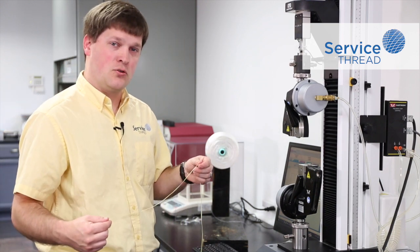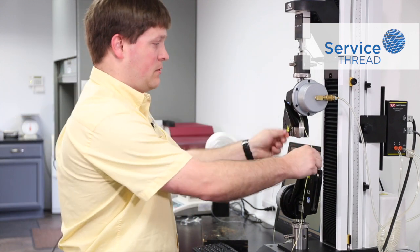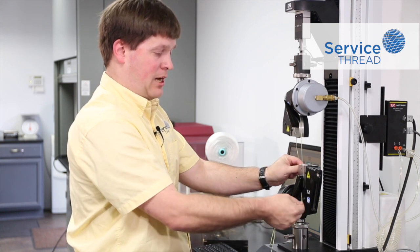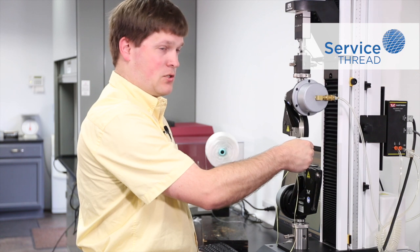The first test is going to use flat yarn. Just like before, we secure the yarn in the top grip and the bottom grip, and the machine starts automatically.